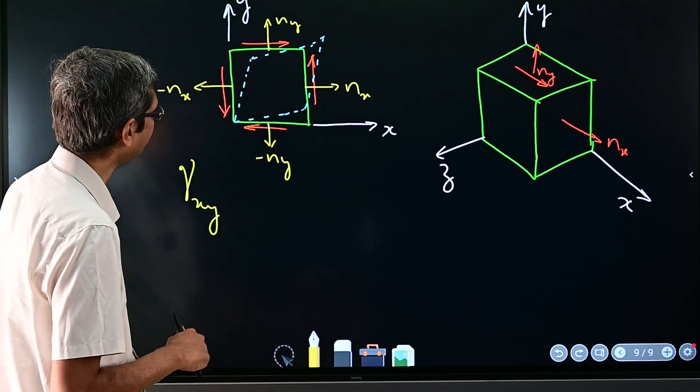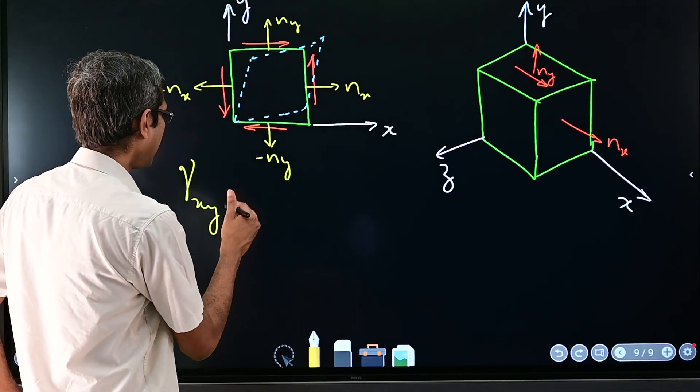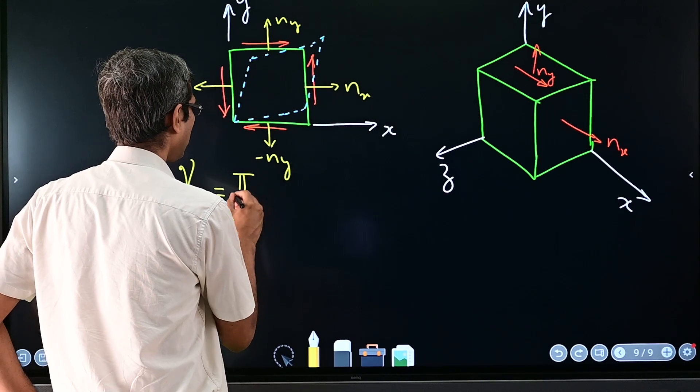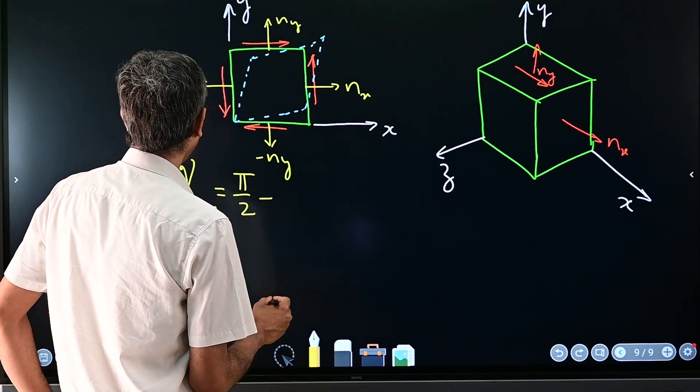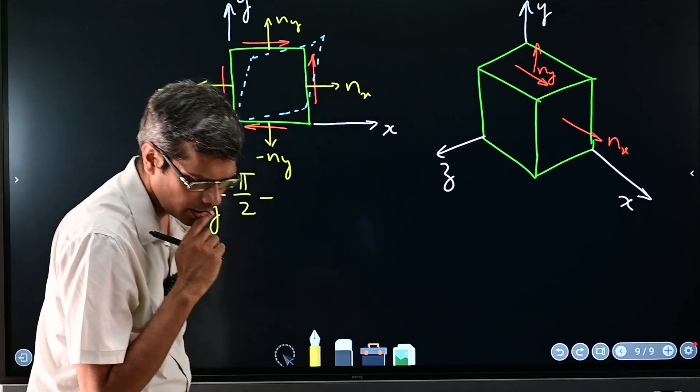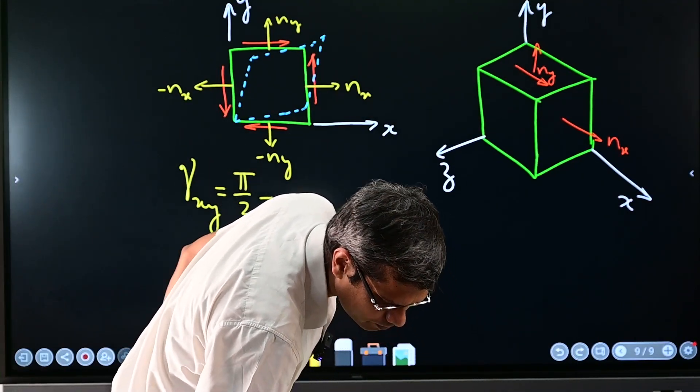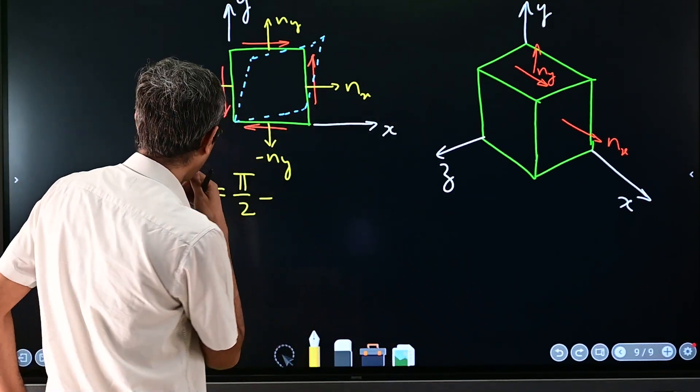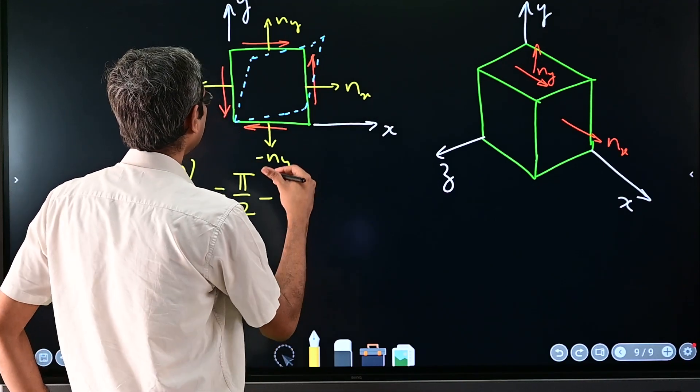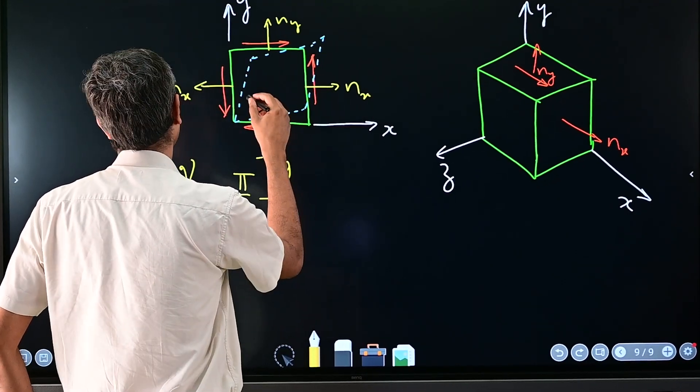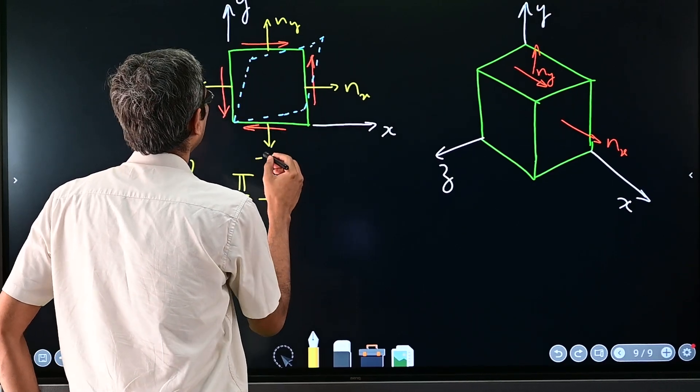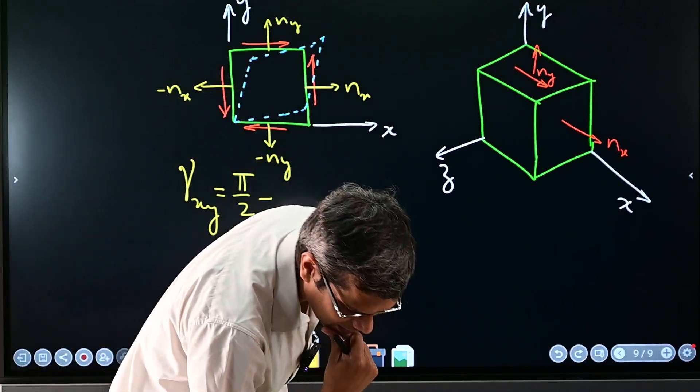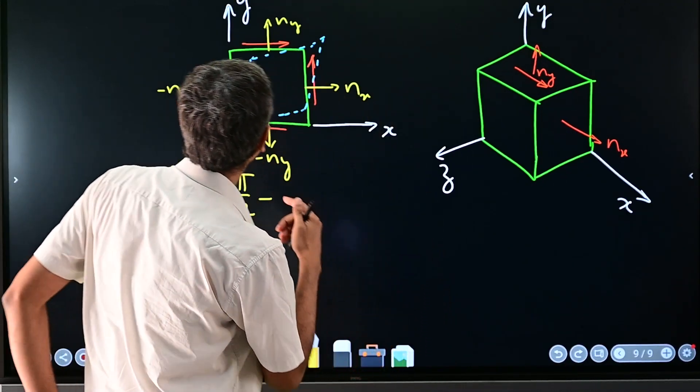Why this xy is coming into this subscript for this strain is this: we are talking about two pairs of surfaces whose normals are in x and y direction respectively. And then that is defined as pi over 2 minus whatever angle.